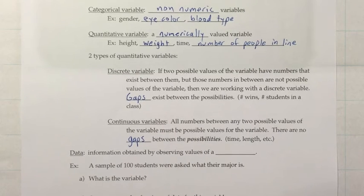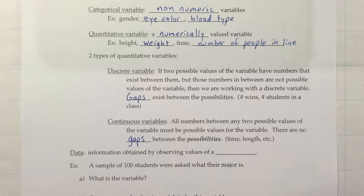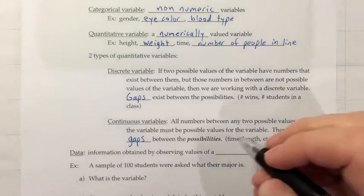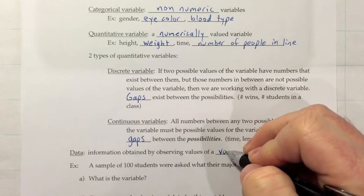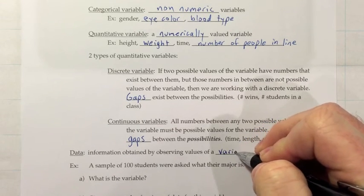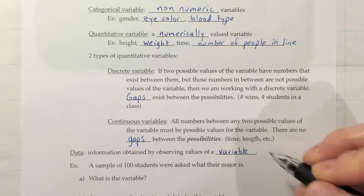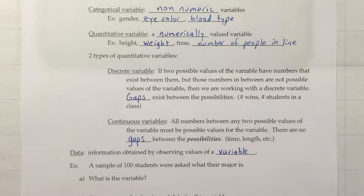And then, in addition to talking about variables, we also have a definition for data. And data is the information obtained by observing the values of a variable. In looser terms, you could say that when you're talking about the variable, you're thinking about the question that's being asked. And when you think about data, you're thinking about the answers you're getting. So, let's try and clarify that a little bit with some examples.